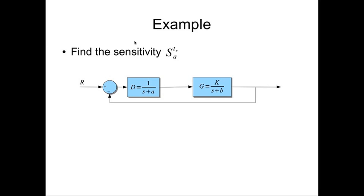Let us look at another example here. Here, we are asked to find the sensitivity of the rise time with respect to the parameter a. Now, this is our closed loop control system. Controller is given by 1 divided by s plus a. Plant is given by k divided by s plus b.